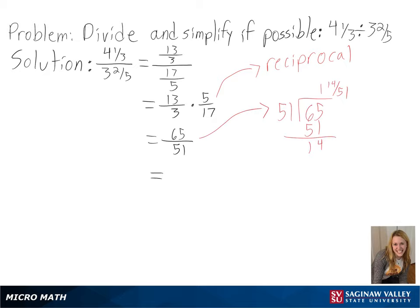We can then use long division to convert back into a mixed number and get 1 and 14 over 51 as our final answer.